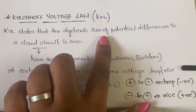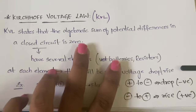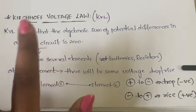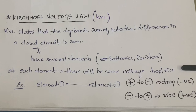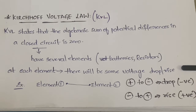KVL states that the algebraic sum of potential differences in a closed circuit is zero. In a closed circuit, the sum of potential differences should be equal to zero. This obeys the law of conservation of energy — KVL is also called the law of conservation of energy.